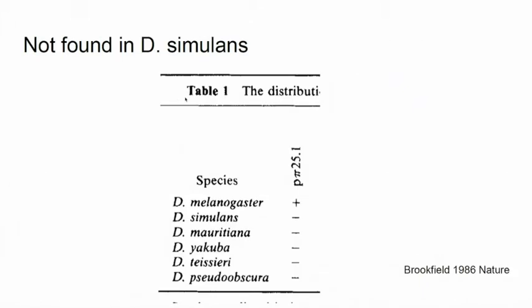The P element has a particular distribution in Drosophila genomes. It was only found in melanogaster — never in simulans, never in mauritiana, never in yakuba, and so on. How can one element occur in just one species and not the others? Probably because of horizontal transfer from a very distantly related species, Drosophila willistoni in this case.